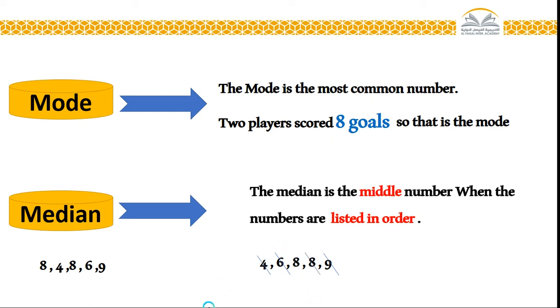But sometimes, still two numbers. For example, eight and four. In this case, what do I have to do? Which one I will choose as a median? Look, in this case, you have to add these two numbers. Eight plus two will be ten.